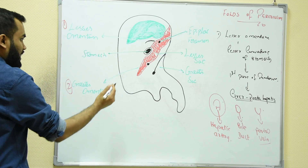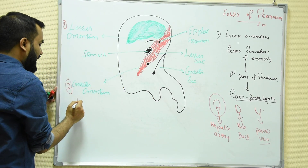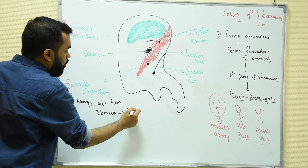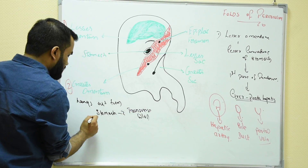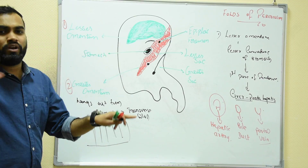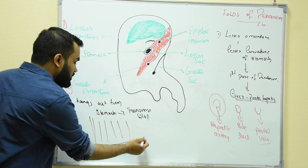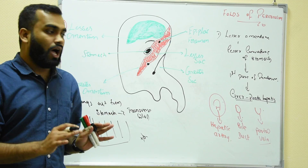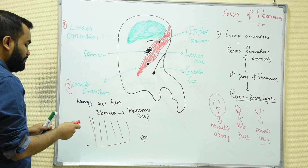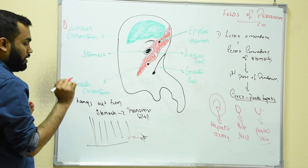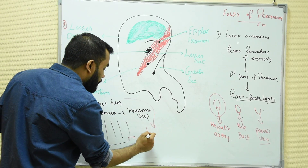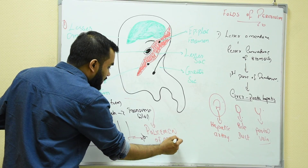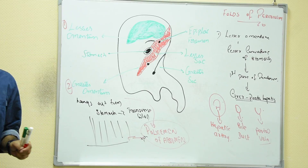The next fold is the greater omentum. It hangs out from the stomach and goes till the transverse colon of the large intestine. It is a hanging structure all around the abdomen. If there is any infection — say bacteria or any other infection — the greater omentum will prevent it from spreading throughout the abdomen. That is why the greater omentum is also called the policeman of the abdomen, just as the WBC is called the policeman of the body.